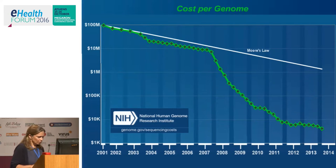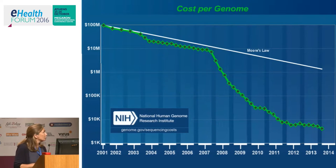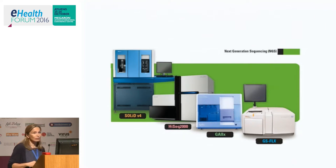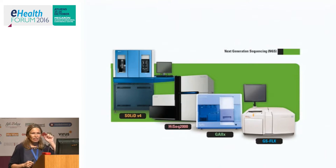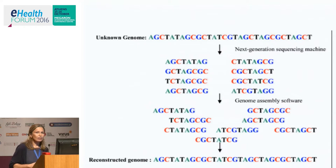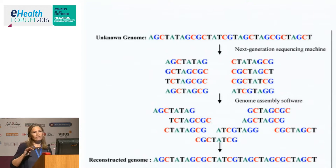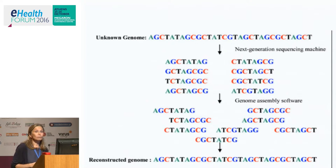What really happened here is that the technology to read the genome — to read DNA — changed through what we call next-generation sequencing machines. Instead of putting markers and analyzing sequence by sequence, the approach became: take the unknown genome, cut it in pieces, read small pieces, and then use a big computer to assemble it all together and see what is expressed. That is how the technology changed and what makes it all faster.